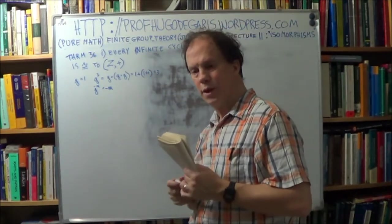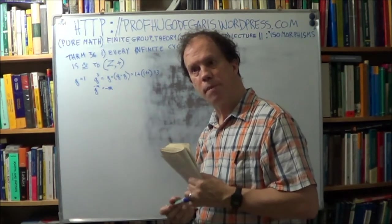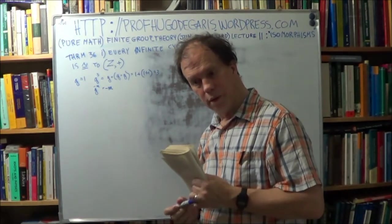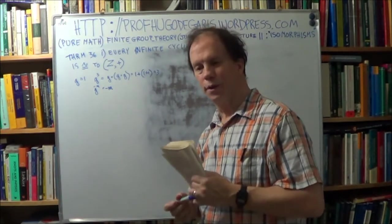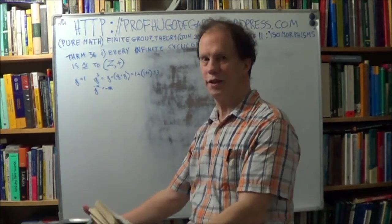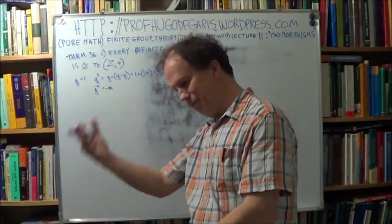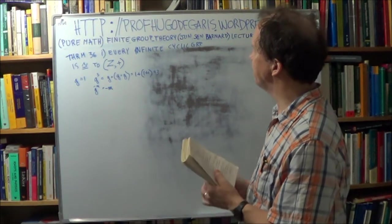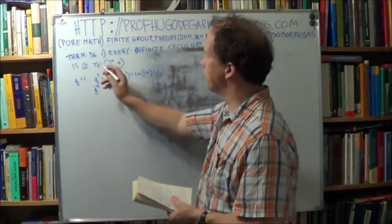I suppose in a way it doesn't matter. Is that true? Like, if set A is isomorphic to set B, it seems to be pretty obvious that set B is therefore isomorphic to set A. I mean, what is isomorphism? It means the two group tables are identical, right? So if A is identical to B, then B is identical to A.